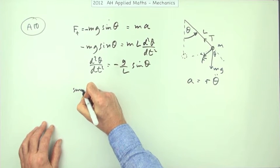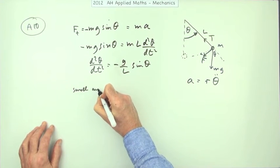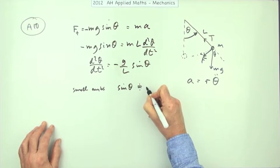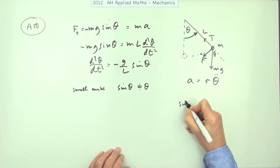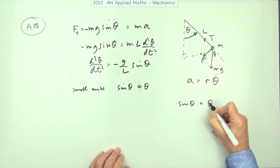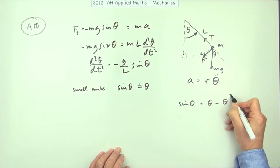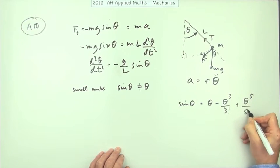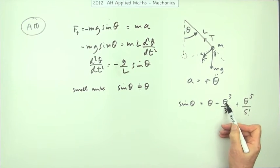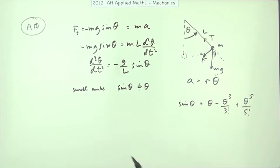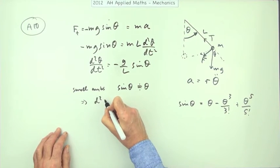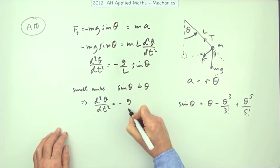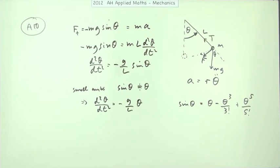Remember theta's measured in radians, and for small angles, the sine of theta approximates just to theta, because remember the Maclaurin's expansion of sine theta would be theta minus theta cubed over 3 factorial plus theta to the power 5 over 5 factorial. So if these are small fractions, these numbers are going to be very small, which means that you end up with this: the second derivative, or if you like the angular acceleration, is negative g upon l times theta.